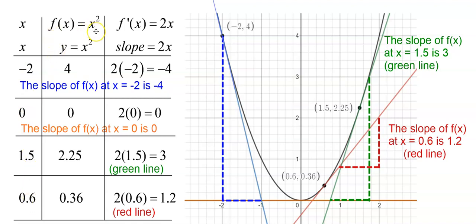Then I found the y value for each of those x values. So I'm just squaring each of these. So negative 2 squared is 4, 0 squared is 0, 1.5 squared is 2.25, 0.6 squared is 0.36. And you can see that those points are all labeled on the graph. I didn't label the 0, 0, but there's the 0, 0. There's negative 2, 4.00, there's 1.5, 2.25, and there's 0.6, 0.36. So those points are all plotted on my graph.